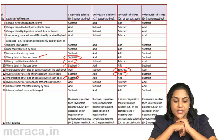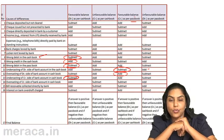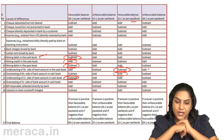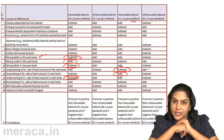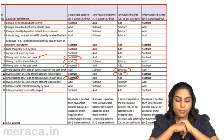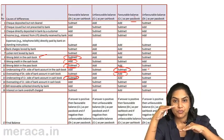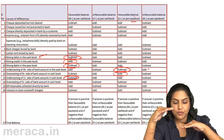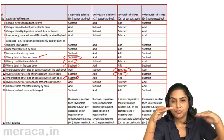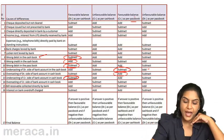Overcasting of the credit side of the bank account in the cashbook. The credit side of the cashbook is withdrawal. Overcasting would show more withdrawal in the cashbook, which means the cashbook balance goes down. Passbook balance is higher; if you start from the cashbook, you add to reach the passbook.